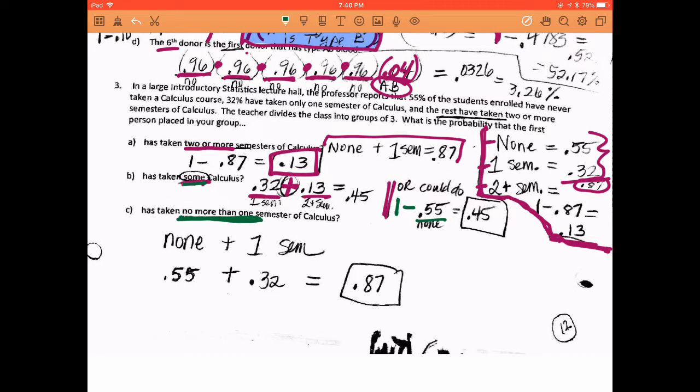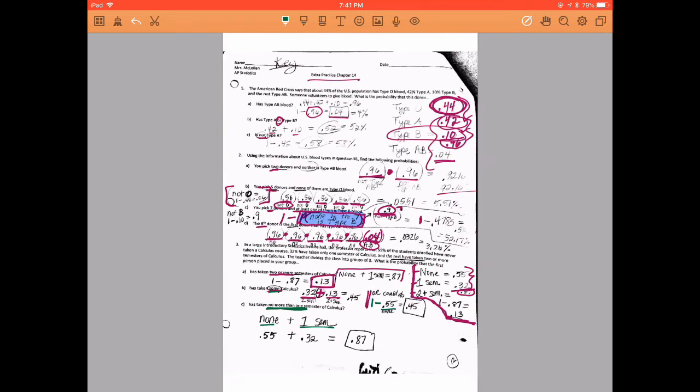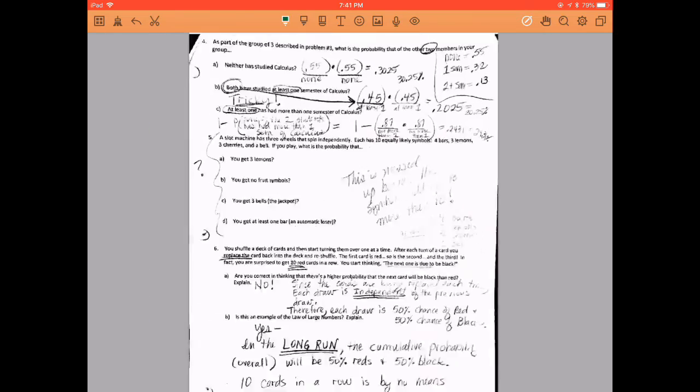Okay. What's the probability that a student has taken no more than one? So no more than one means none or one is okay. So the none is that 55%, the one semester is that 32%. And so you can add those together, and that's how you get that 0.87.